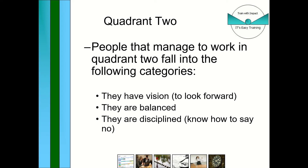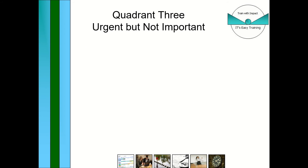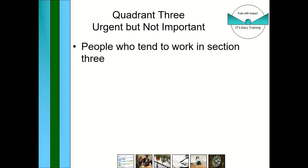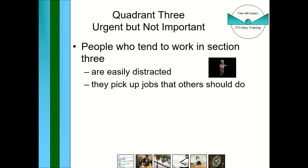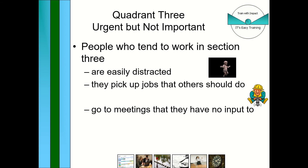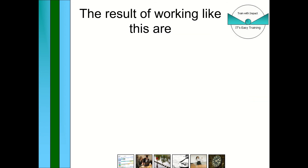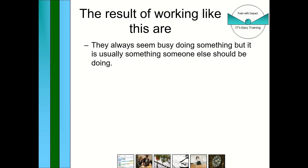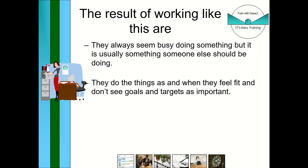Quadrant three — urgent but not important — is where people do things they want to do. For example, someone promoted from a job they were really good at keeps getting asked for advice by their replacement but ends up doing the job instead of just advising. They're easily distracted, pick up jobs others should do, and go to meetings where they have no input. They seem really busy and well-liked, but if you analyze what they're doing, they're not very productive.